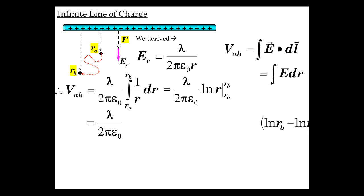So, constant times ln of R(b) over R(a). So that's the result we get for the potential difference between those two points, which comes fundamentally from the idea that that potential difference is integrating the E field across that region of space.